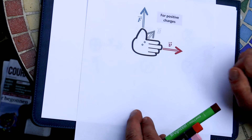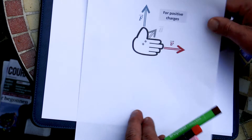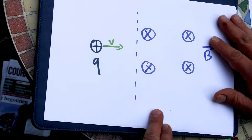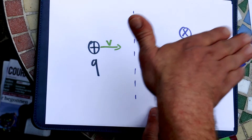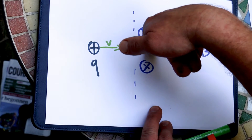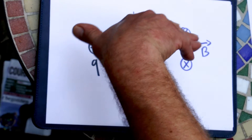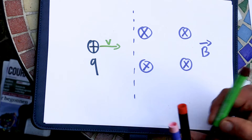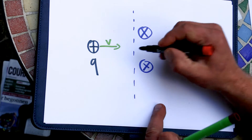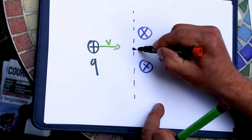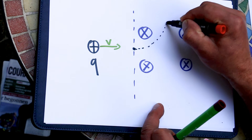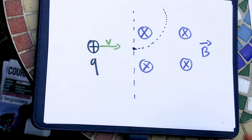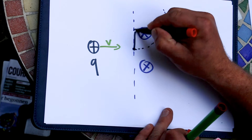And the thumb will give you the magnetic force. So if we apply it here, we see the magnetic field is going downwards, the velocity of the charge is that way, so the force will be upwards. You can see that if I draw the trajectory when it enters the field, the trajectory of the particle will be upwards because it feels this magnetic force.